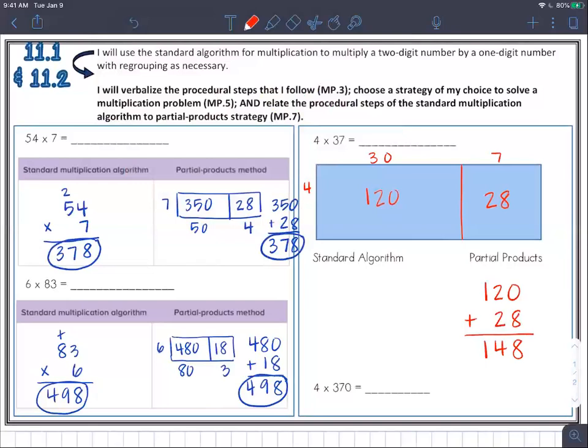Let's check it with the standard algorithm: 37 times 4. That's the same as 4 times 37. 7 times 4 is 28, and 3 times 4 is 12. 13, 14, 148. I'm going to skip the last one down there for the notes because I think we've done enough problems.